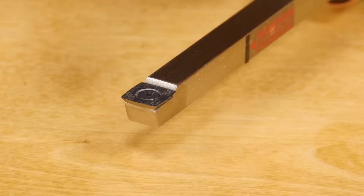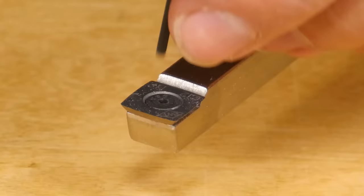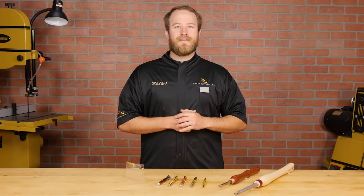Pen turning is always evolving and one recent development is the carbide insert tool. These tools use small replaceable carbide cutters set in a square tool shank and when the cutter gets dull you simply rotate to a fresh cutting edge.